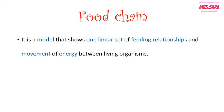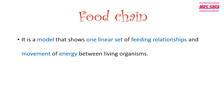The primary consumer feeds on the producers, which are the plants. Then the secondary consumer feeds on the primary consumer, and the tertiary consumer feeds on the secondary consumer. The decomposers feed on the dead bodies of dead organisms. These are called feeding relationships.